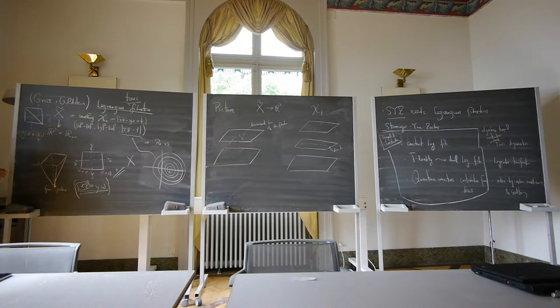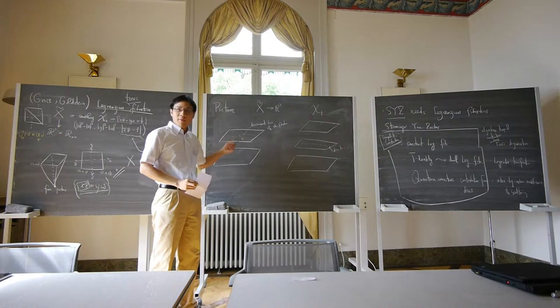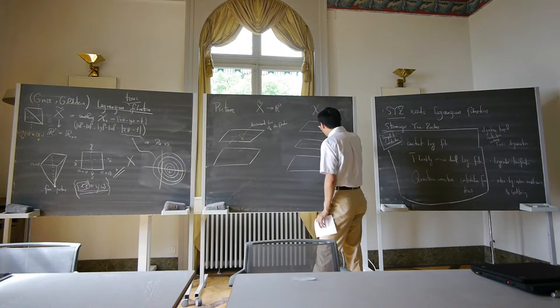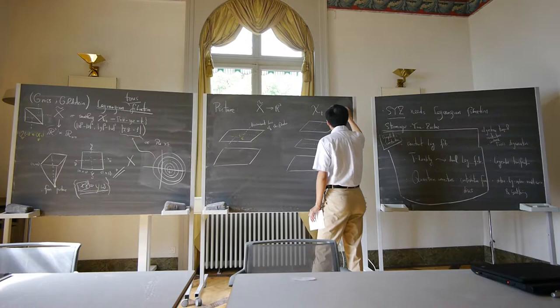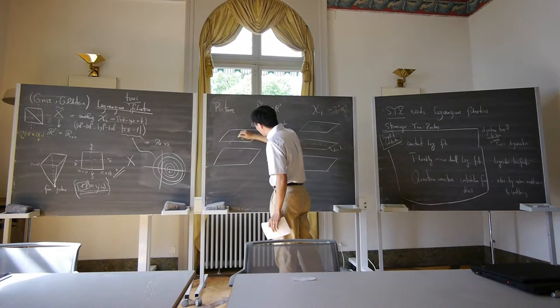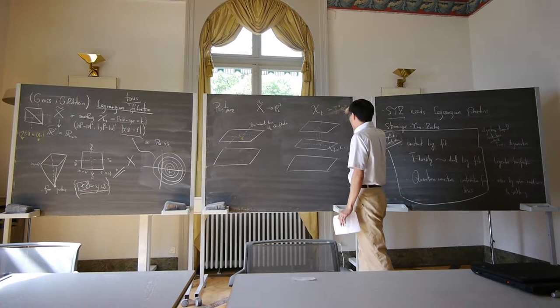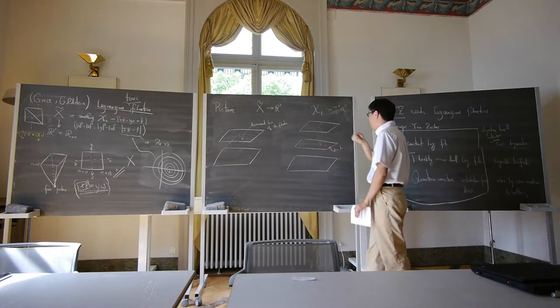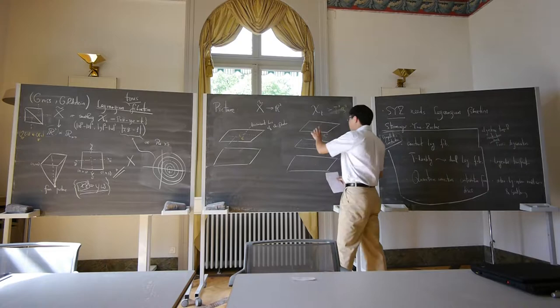We call this O(-1) ⊕ O(-1) over ℙ¹. The S³ is here: X_T is basically T*S³, and the S³ is located along this vertical line. The ℙ¹ is holomorphic because it is along this direction, while this S³ is a real section — it is a Lagrangian section of T*S³, vertical to this discriminant locus. The conifold transition contracts this S³ and then blows it up to get ℙ¹. This is the fibration picture.